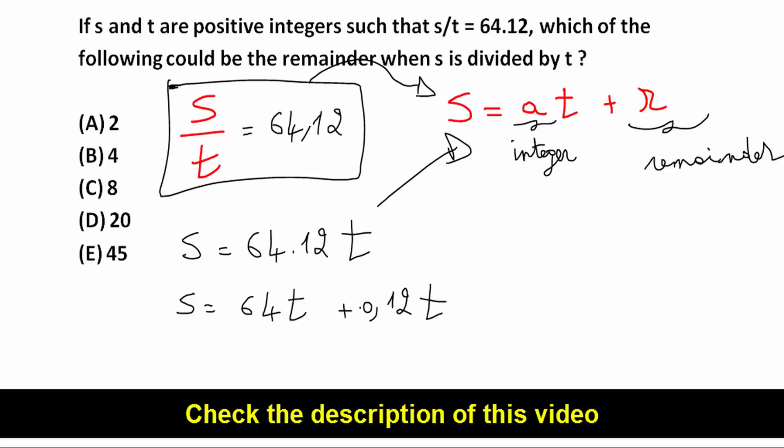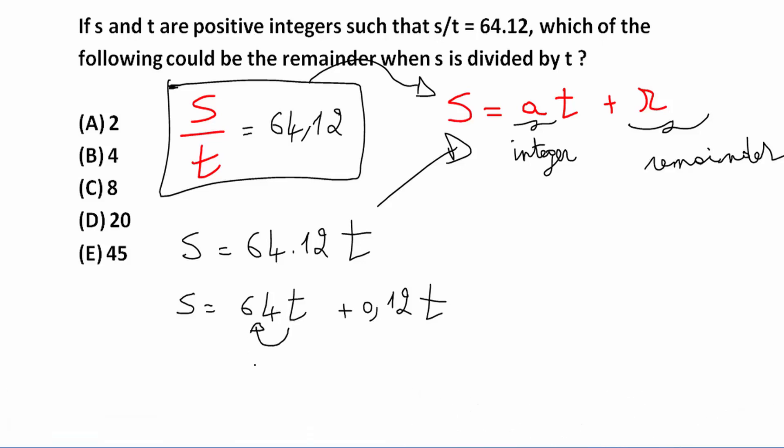Why I wrote it this way? Because I want an integer here behind the T, which is 64. So because A here is an integer, that's why I wrote it 64 T plus 0.12 T.